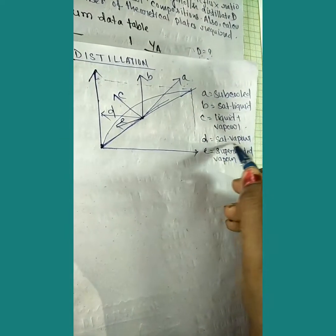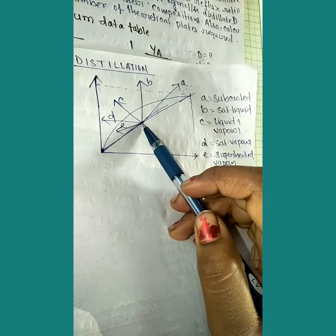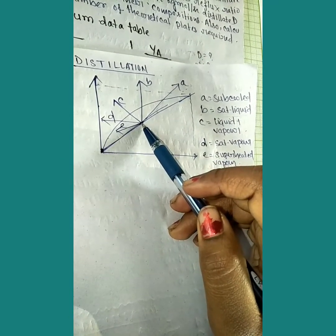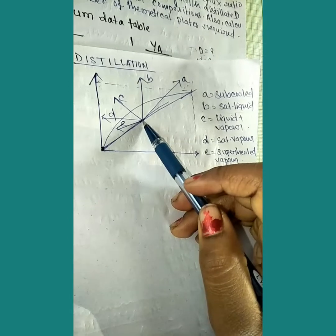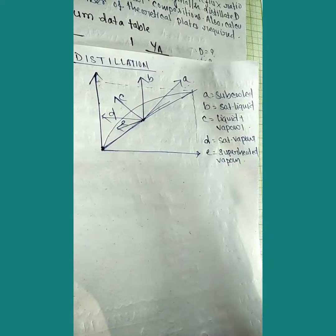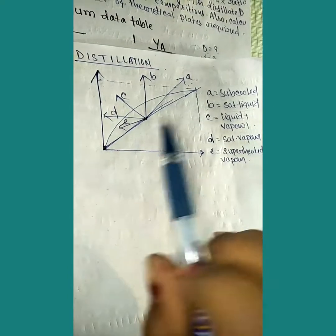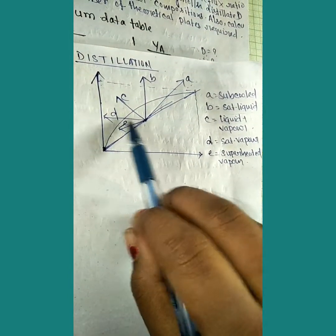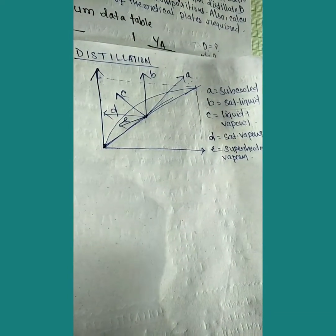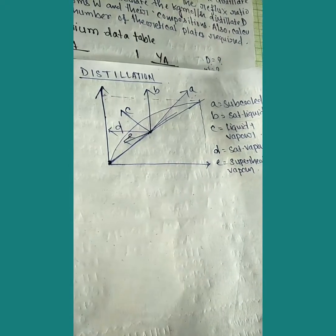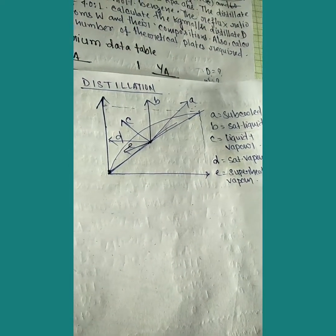D is saturated vapor and E is superheated vapor. These feed line types are important when calculating the number of equilibrium stages, and the feed line helps you determine the tray number. Now let's start with the question.